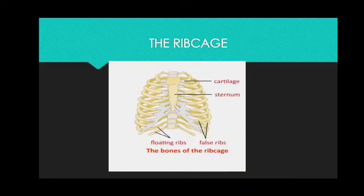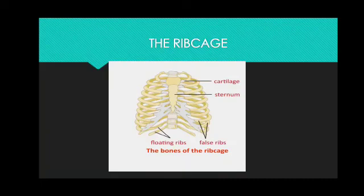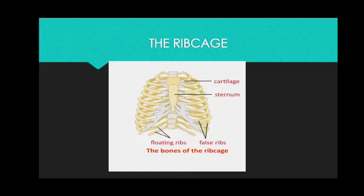Now let us move on to the next structure, the rib cage. The rib cage is in the chest and is made up of 12 pairs of ribs. Each rib is a slender curved bone. The top seven pairs are called true ribs because they are directly attached to the spine at the back and to the breast bone or sternum in the front with cartilage. The eighth, ninth, and tenth pairs of ribs are attached to the cartilage of the seventh pair and not directly to the sternum, so they are called false ribs.